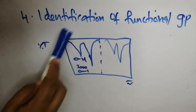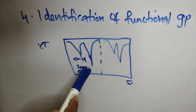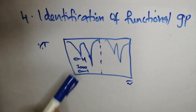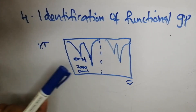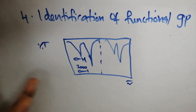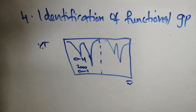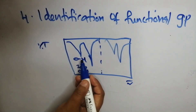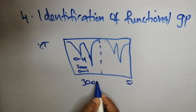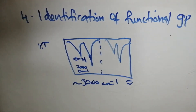The fourth application is the identification of functional groups using IR spectrum. The functional group region spans 4000 to 1450 cm⁻¹. We observe the IR spectrum of a sample, and if there is an absorption band around 3000 cm⁻¹ in the functional group region, we can conclude that this compound contains an O-H bond.